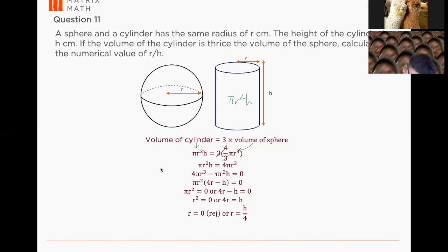I can show you method 2. So if you were thinking that, what if I forgot that I don't know how to use quadratic equation? So let's look at this part here. So method 2, you have πr²h equals to 4πr³.